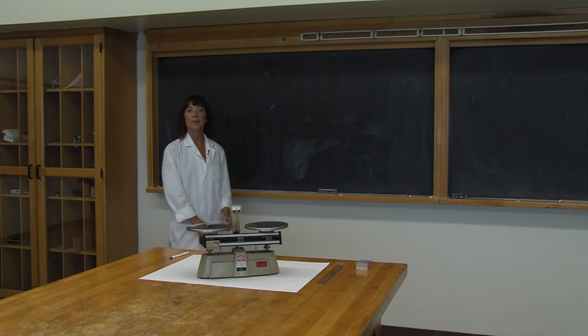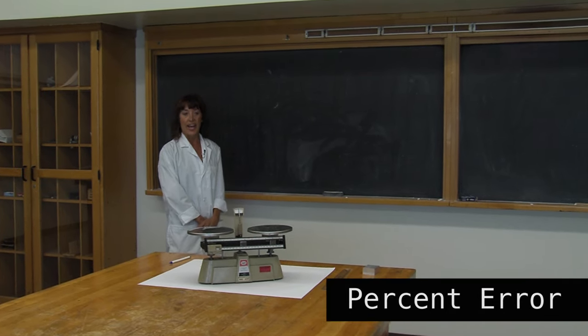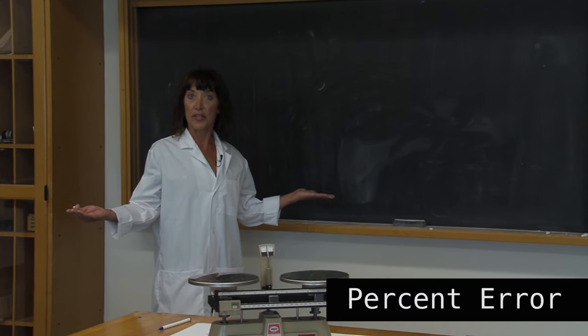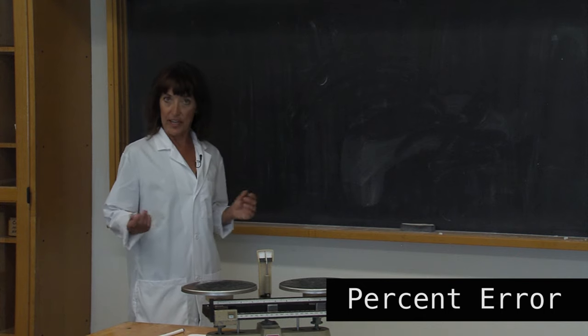Our final calculation is called the percent error, and this lets us know how good our experimental results are. This is a simple calculation.